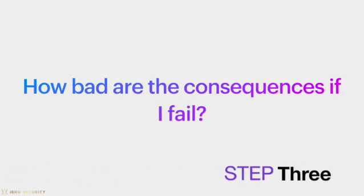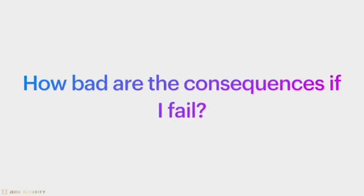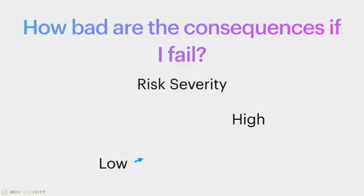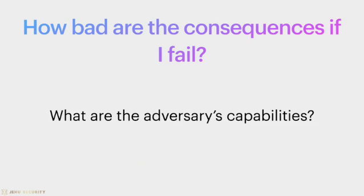Step three: how bad are the consequences if I fail? This addresses risk severity associated with a successful attack, and it's important to understand that there are different levels of risk from high to low. For items on your list, consider what would happen if they weren't protected. Photos of your children may be deleted and those digital memories lost. Private photos of your partner may be released publicly and cause lasting embarrassment. Emails may be released and cause harm to reputation or the loss of a job. Part of this step is to consider the capability of the potential adversary — a hacker on public Wi-Fi might intercept unencrypted traffic, or an employer could have access to all information on your work device.